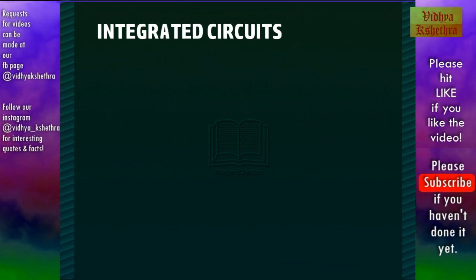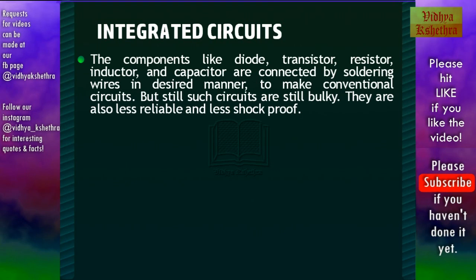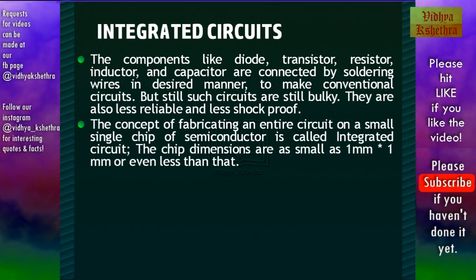Now we can see about integrated circuits. Components like diode, transistor, resistor, inductor, and capacitor are connected by soldering wires in a desired manner to make conventional circuits. But such circuits are bulky, less reliable, and less shockproof. So the concept of fabricating an entire circuit on a small single chip of semiconductor is called an integrated circuit. The chip dimensions are as small as one millimeter by one millimeter or even less.